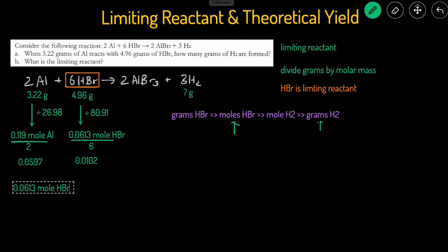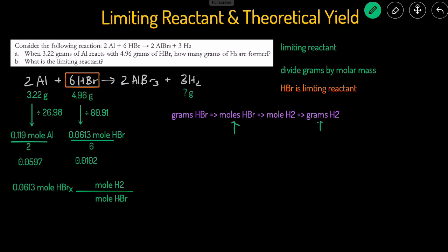Starting with 0.0613 moles of HBr, we convert to moles of H2 using the mole-to-mole ratio. Whatever unit you start with goes on the bottom of the fraction, and what you're converting to goes on the top. So moles of HBr goes on the bottom and moles of H2 goes on top. For mole-to-mole conversions we use the balanced equation's coefficients: there are 3 moles of H2 for every 6 moles of HBr. The moles of HBr cancel out, giving us moles of H2.